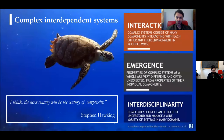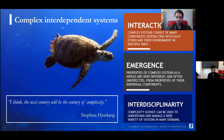Complex systems by definition are large collections of entities that interact in non-trivial ways. They are characterized by emergent properties, meaning their properties cannot be understood by studying the parts in isolation — you must consider the system as a whole. These systems appear across disciplines: sociology, economy, physics, and biology. As Stephen Hawking said, this century is the century for complexity science.